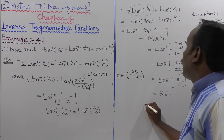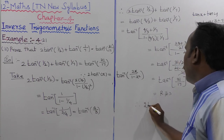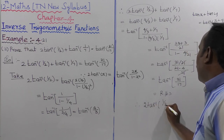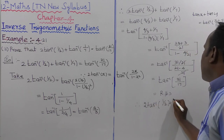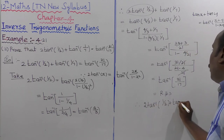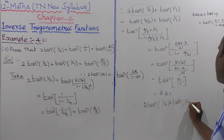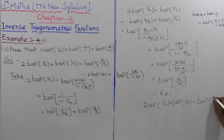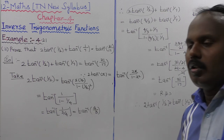Therefore, 2·tan⁻¹(1/2) + tan⁻¹(1/7) = tan⁻¹(31/17). Hence the second subdivision of Example 4.21 is proved.